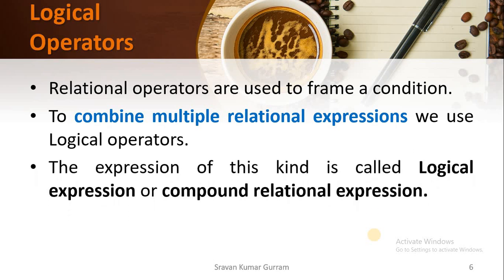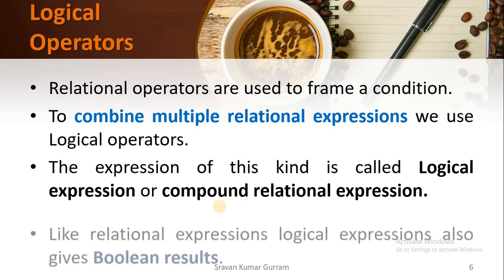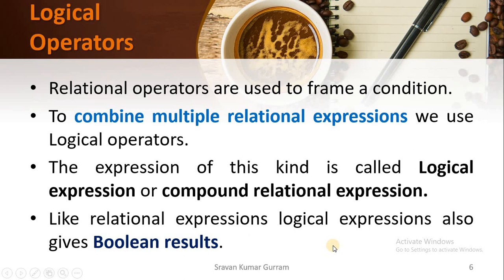The expression of this kind is called a logical expression — combining multiple relational expressions is called a logical expression, or it is also called a compound relational expression. We know that the return type of a relational expression is boolean. Since we are combining relational expressions, the return type of a logical expression is also boolean data type.